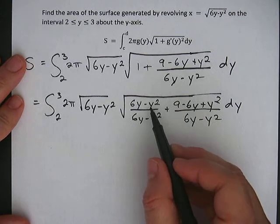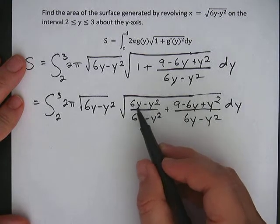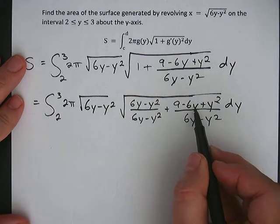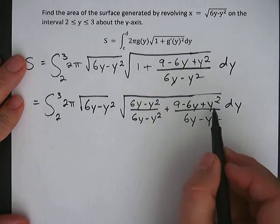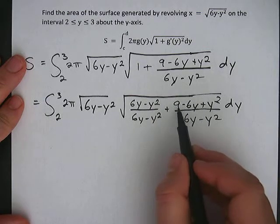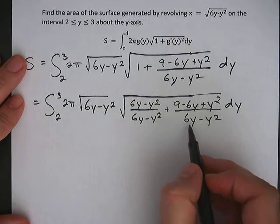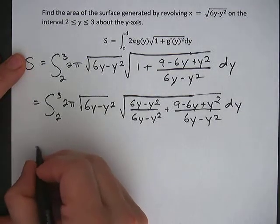Okay, now they have a common denominator. We can bring the top together, rewrite the bottom, and notice I'm going to go through this quickly. We have a 6y and a negative 6y, which will cancel. We have a negative y squared and a positive y squared, which will cancel, which will leave in the numerator only the 9, and the denominator will be 6y minus y squared. So let's write that down.